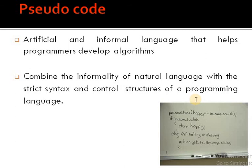Pseudocode is an artificial and informal language that helps programmers develop algorithms. Through pseudocode, we can develop different algorithms and logic, and then we can use actual code. It combines the informality of natural language with the strict syntax and control structures of a programming language.